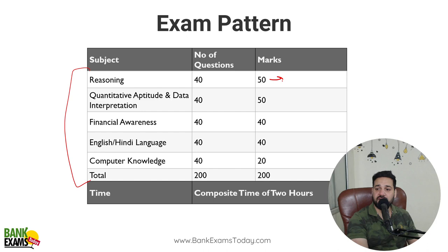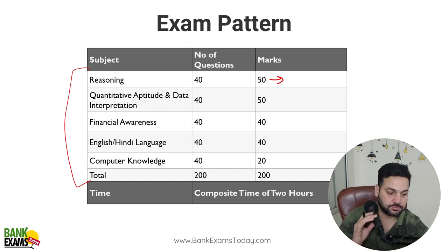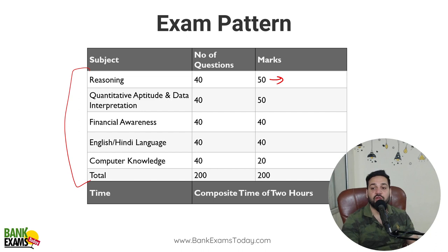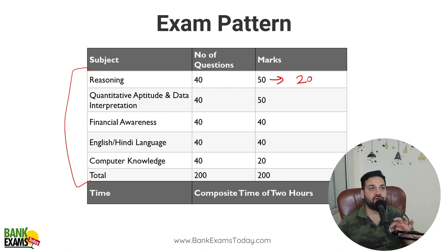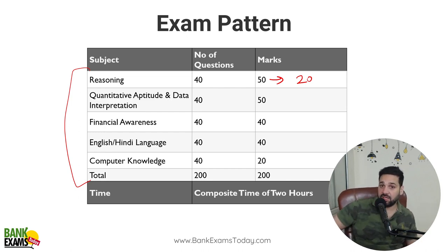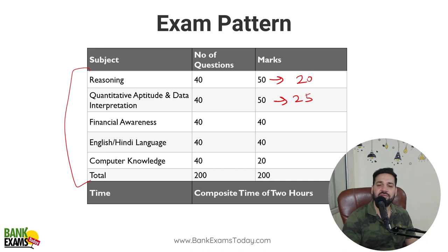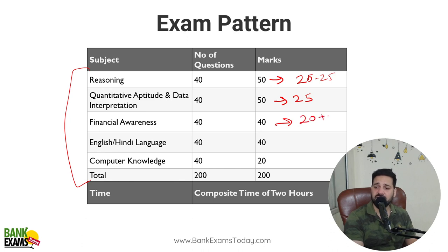Most of our students find Reasoning Ability a bit difficult since they're attempting it after a long gap. Out of 50, if you're able to score 20-25, that is a very good mark according to me. Do not try to score 40-45 out of 50 — if you haven't been getting those marks in test series, don't chase them in the exam. For Quantitative Aptitude as well, attempt around 20-25 and aim to score at least that much.